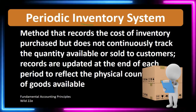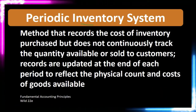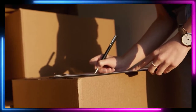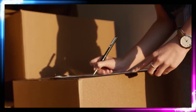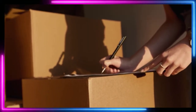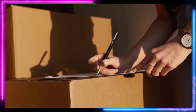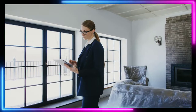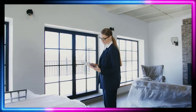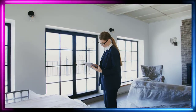We're talking about an inventory system, and the periodic part means that we are not going to record the reduction in inventory or the related cost of goods sold at the point of sale. Rather, we do so periodically — whether that be the end of the day, the end of the week, or the end of the month — after we do a physical count.